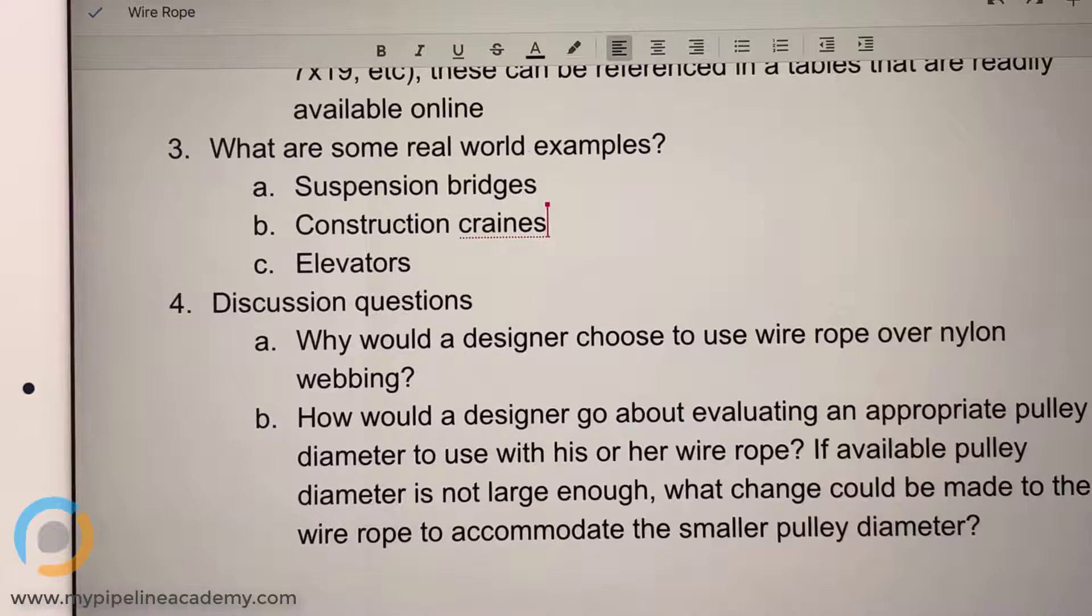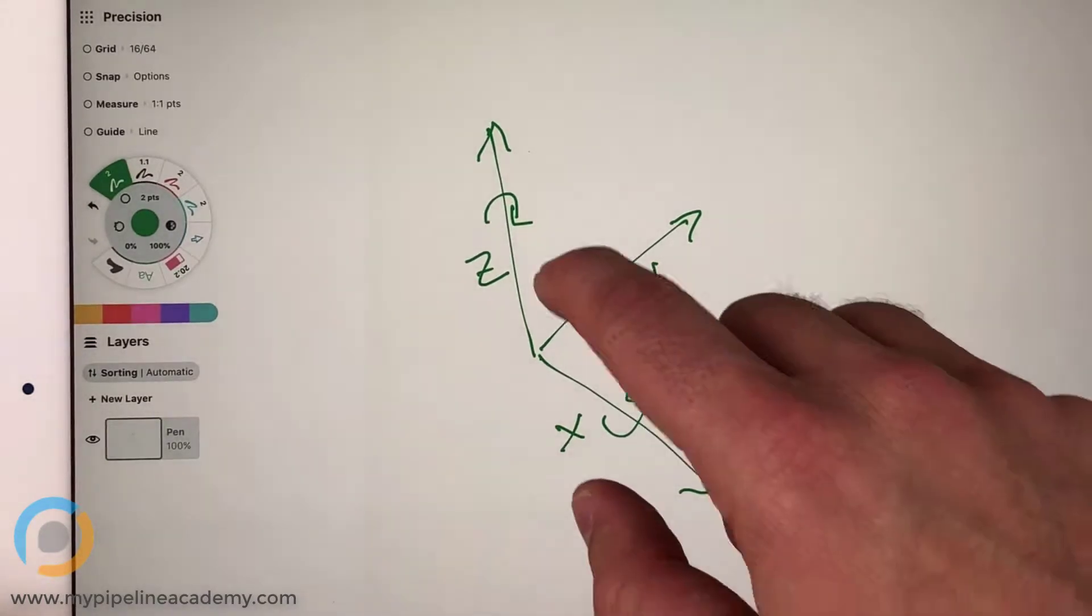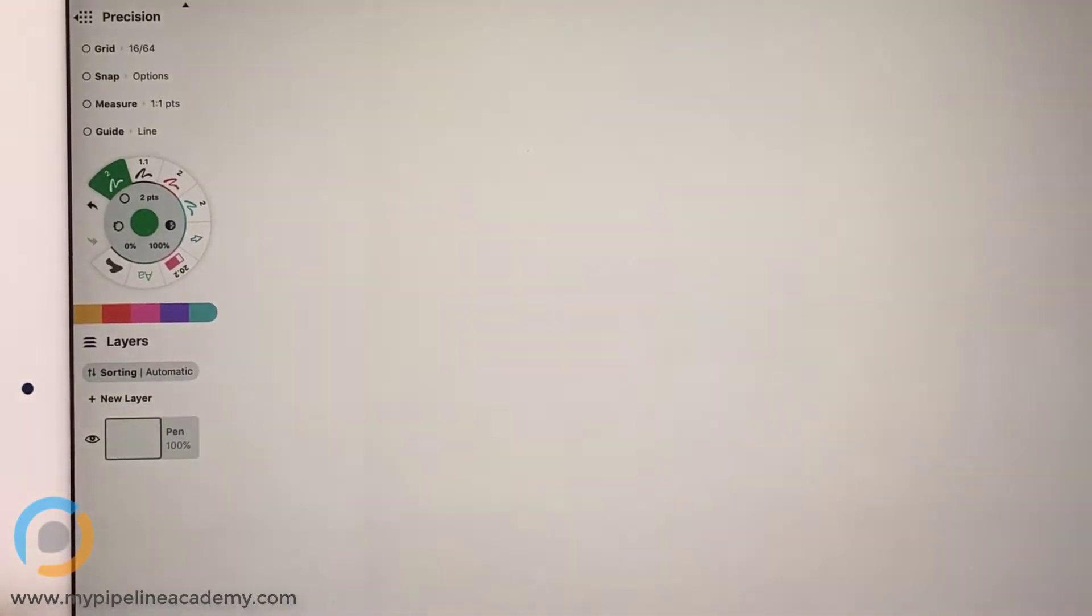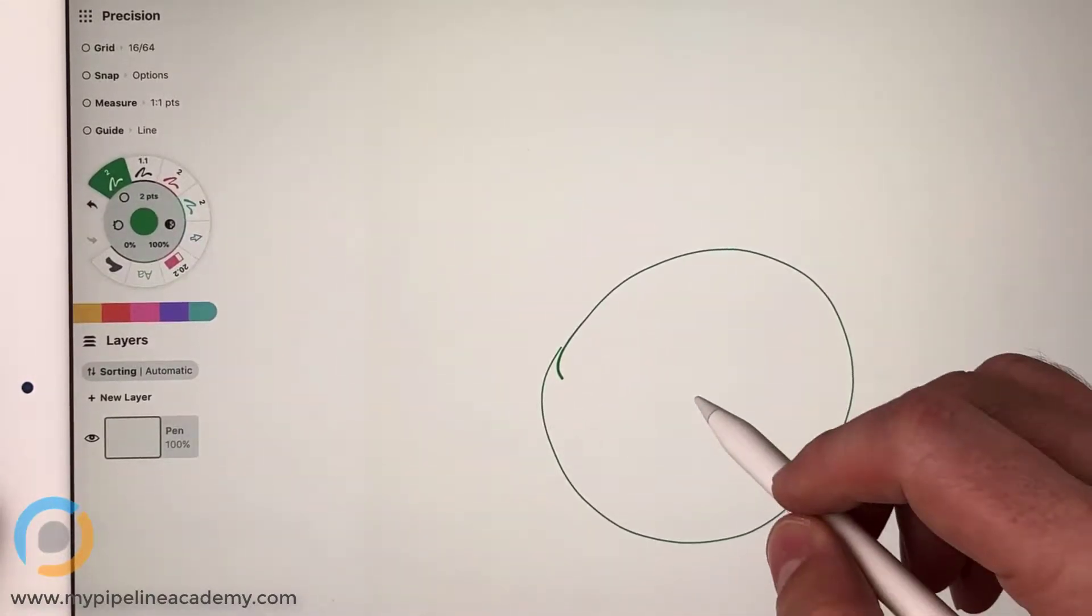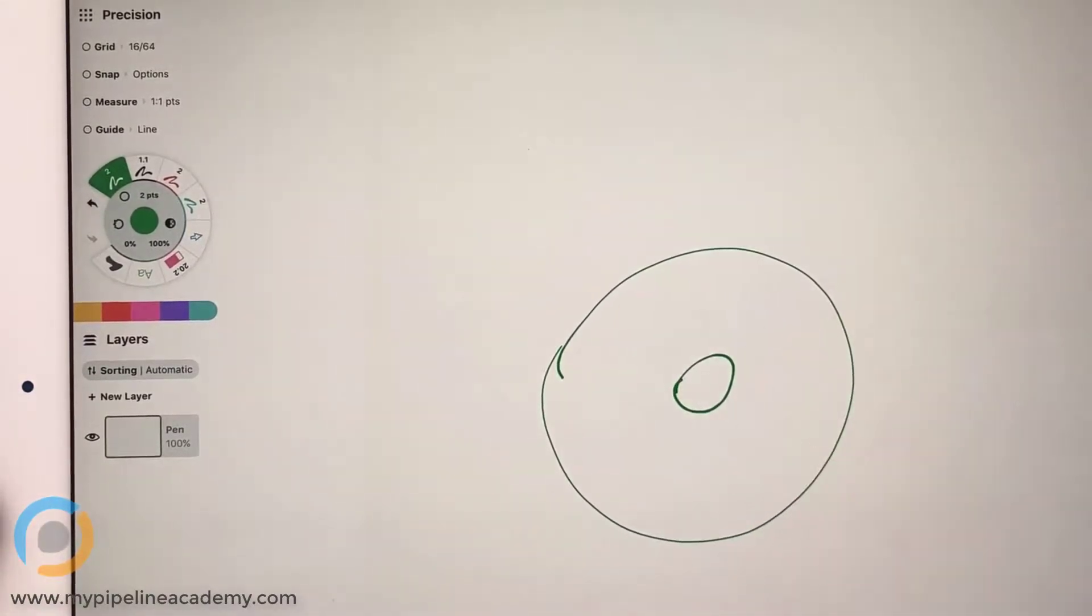Okay. So, let's see. How would a designer go about evaluating an appropriate pulley diameter to use with his or her wire rope? So, let's stop there first. And how would we go about evaluating an appropriate pulley diameter to use with a wire rope? Let's say pulley diameter. A pulley diameter is, let's sketch it out over here. So, let's say we've got a pulley. I'm just going to draw it as a circle. This is our pulley. And there's a hole in the middle where it spins.